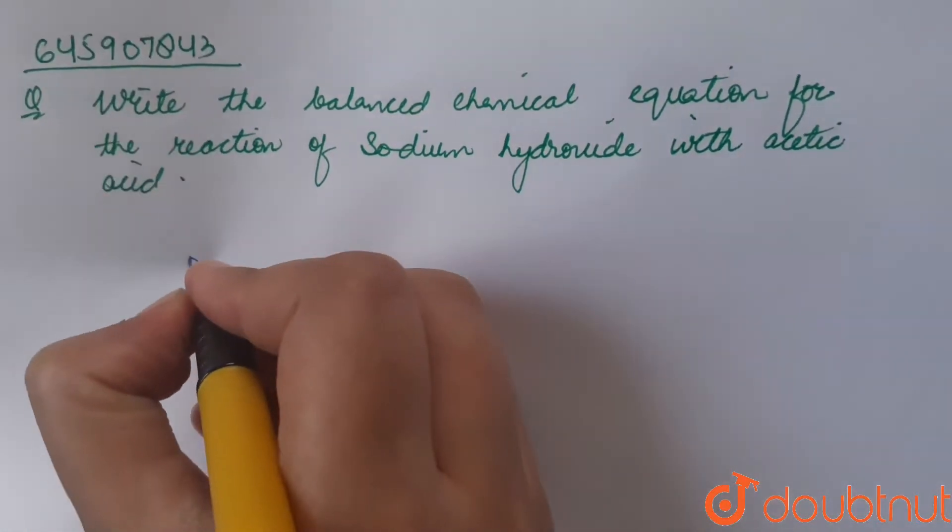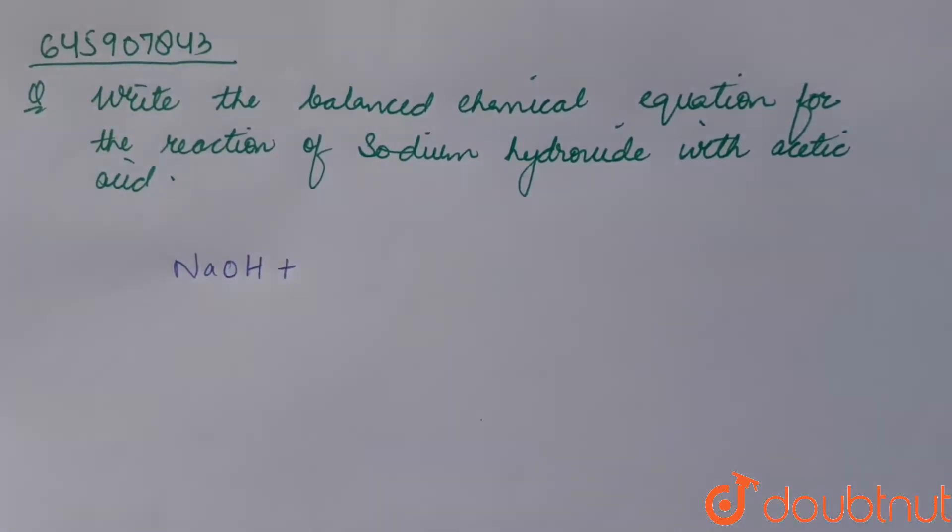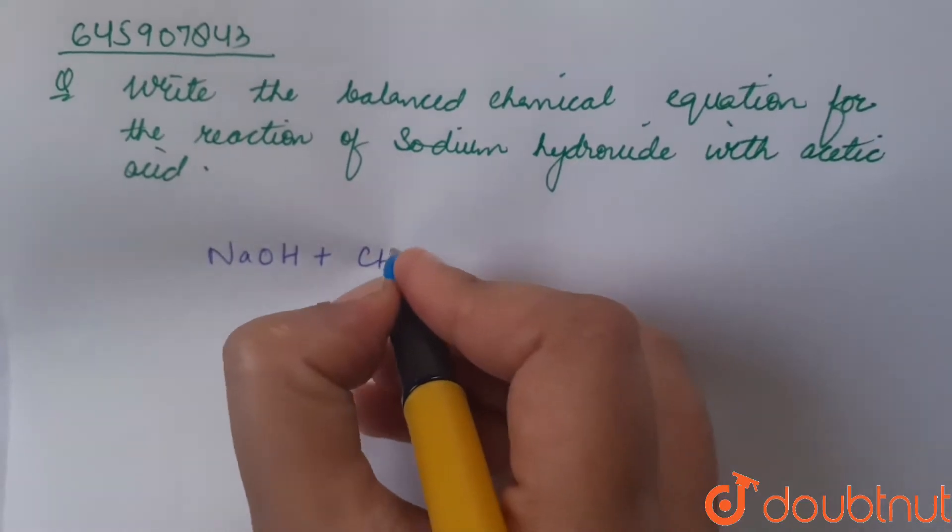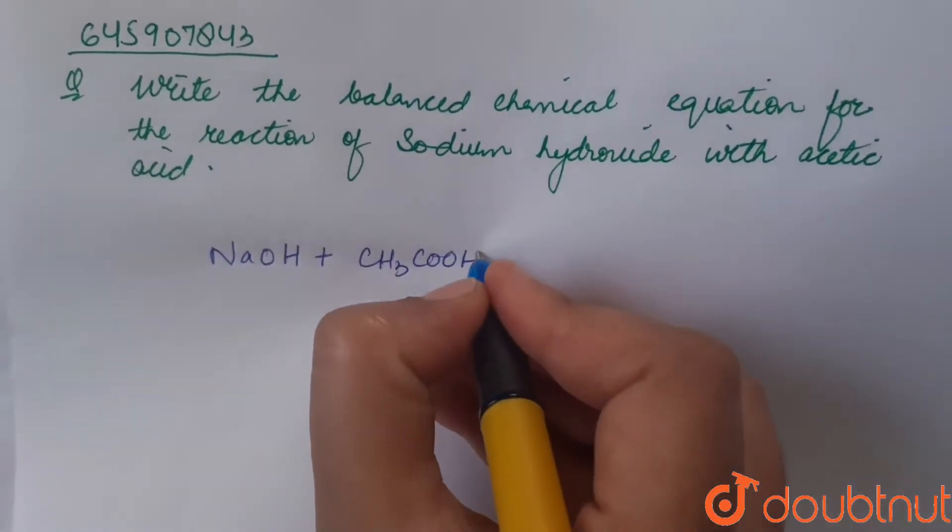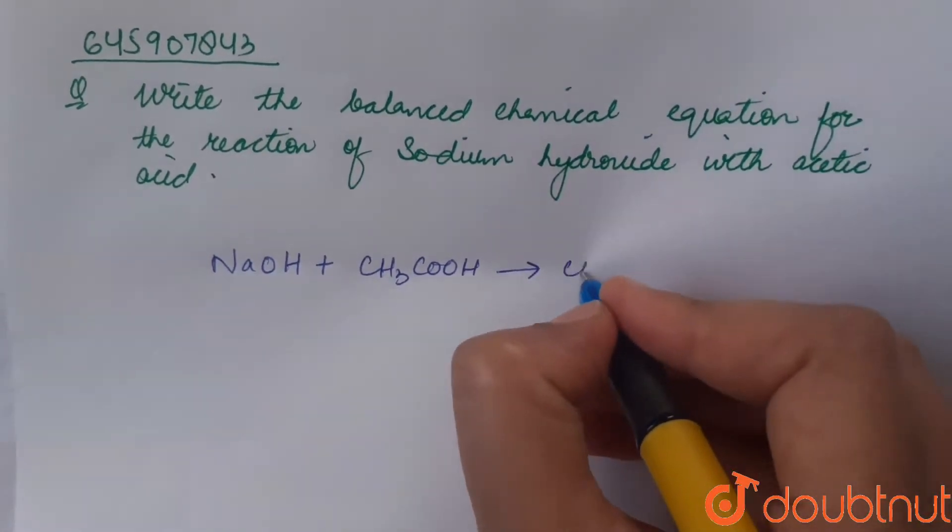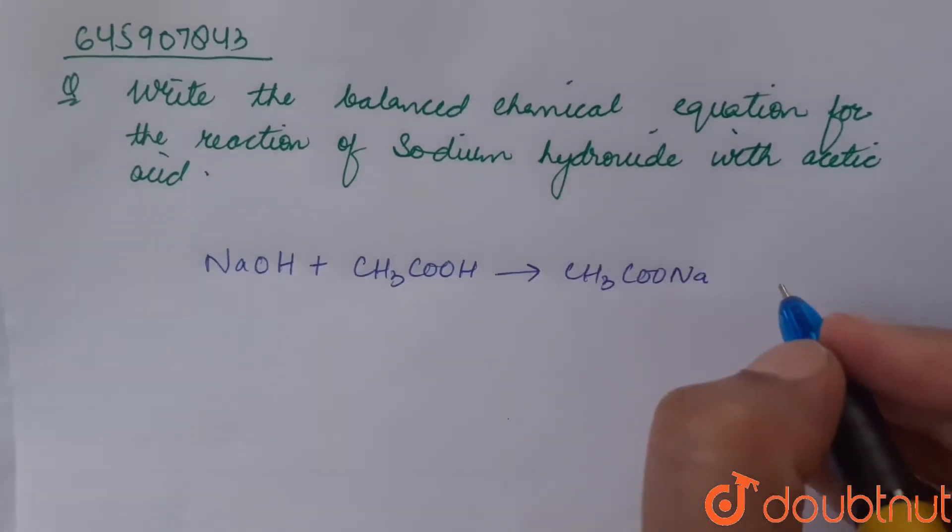Sodium hydroxide, that is NaOH, when sodium hydroxide reacts with acetic acid, that is CH3COOH, they form sodium acetate, that is CH3COONa, and water H2O.